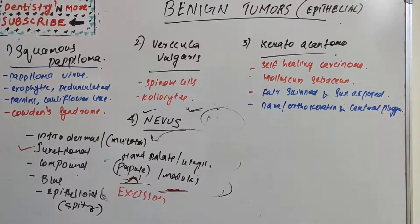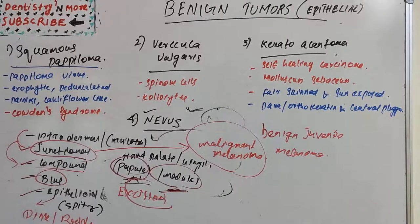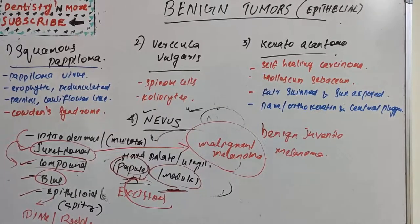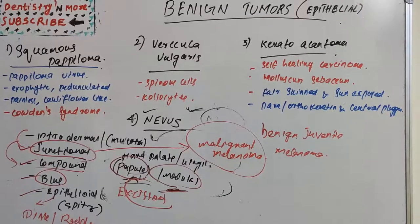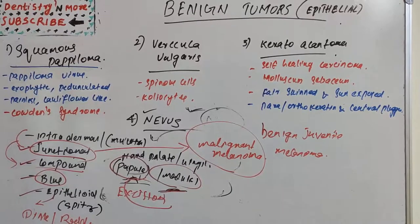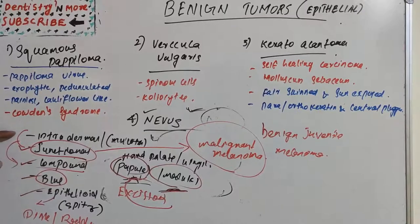Histopathologically, junctional nevus is characterized by nevus cell nests in the basilar region of the epithelium, with no nevus cells found in the surrounding connective tissue. It presents as a solitary small pink to reddish-brown papule occurring on the skin of the face and extremities of children. Histologically it is composed of spindle-shaped and large epithelioid nevus cells with abundant cytoplasm, in circumscribed nests at or near the dermal-epidermal interface, and may be multinucleated. Treatment is conservative excision.